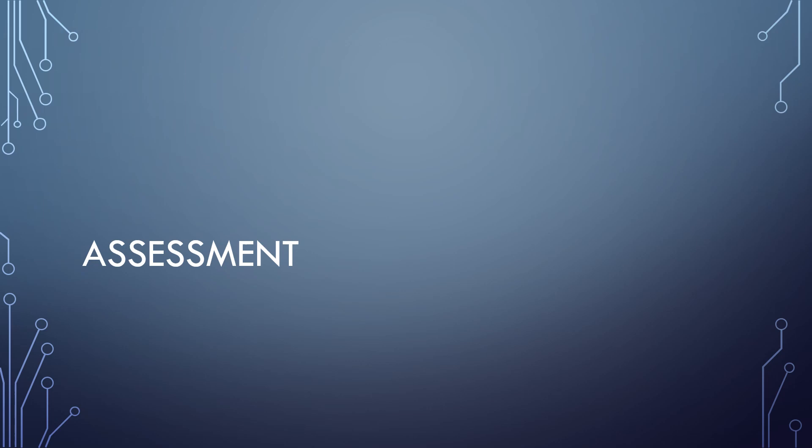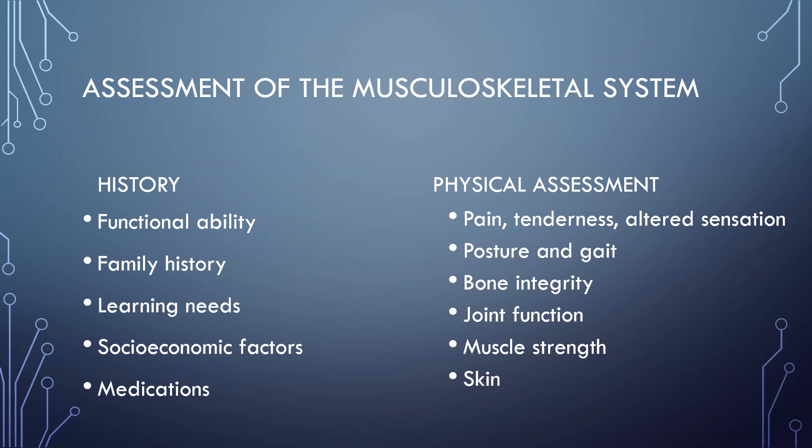Now we're going to talk about how we assess the musculoskeletal system. When we assess our patients, we need to start with their history. We need to discuss the person's functional abilities — can they complete their ADLs or do they require assistance? Are they using any assistive devices to help them with ADLs or mobility? We need to assess their family history to see if they're at risk for something, their learning needs, and socioeconomic factors that may affect their ability to move and function. We also need to assess what medications they are taking, including over-the-counter.